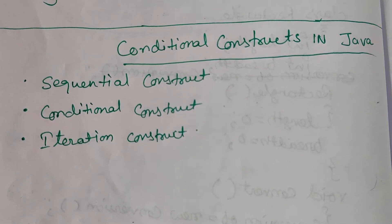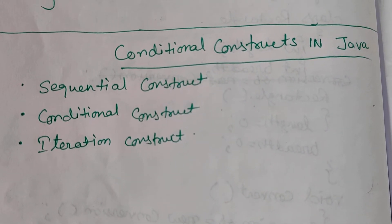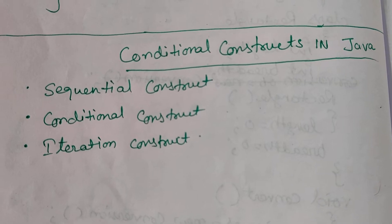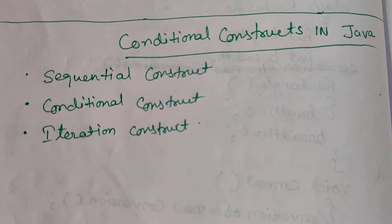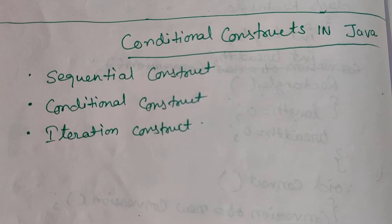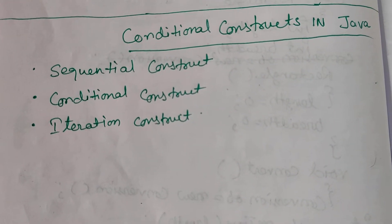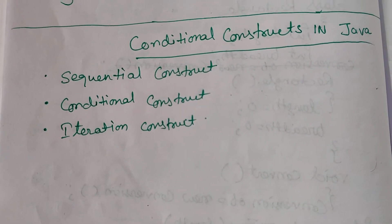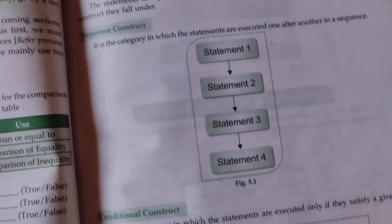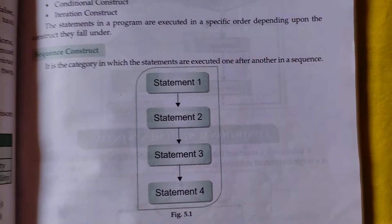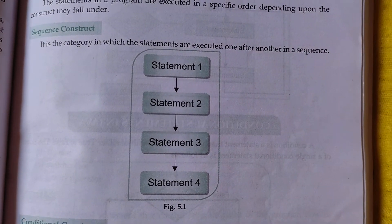Today our topic is conditional constructs in Java. We have three types of constructs: sequential construct, conditional construct, and iteration construct. So what is sequential construct? It is the category in which statements are executed one after another in a sequence.